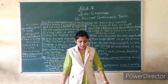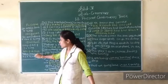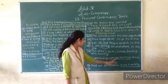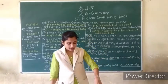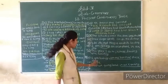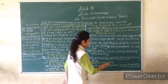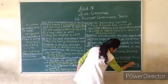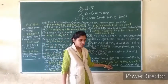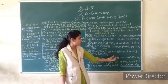Page number 34, fourth question: Frame WH questions for the underlined words. Formula: WH word + is/am/are + subject + verb+ing + remaining sentence + question mark. Example: I am living with my mother these days. Underlined: with my mother. WH word is 'where'. Question: Where are you living these days? Answer: I am living with my mother these days.